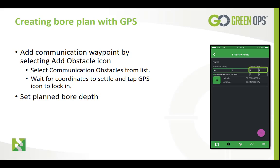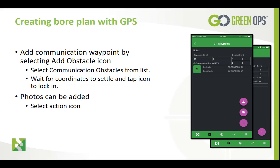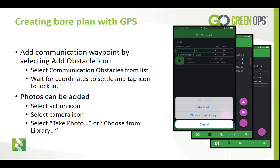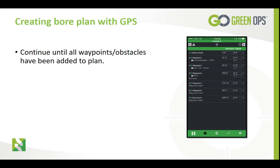Set the plan bore depth in these fields, then set your measured obstacle or utility depth here. If needed, you can add a photo which is tied to this obstacle. Click on the plus action button. You have a choice of adding an additional obstacle by selecting the triangle, but for this lesson we will select the camera icon. Another pop-up appears giving you the choice to select between take photo or choose from library. Whichever you choose, the photo will be added to your plan and associated with this obstacle waypoint. Continue until all waypoints and obstacles have been added to the plan.